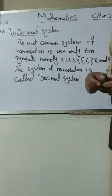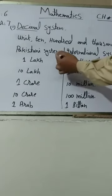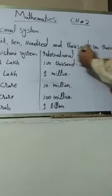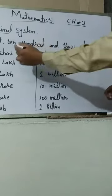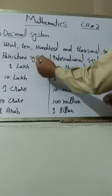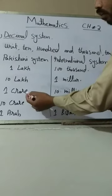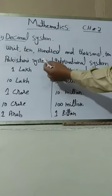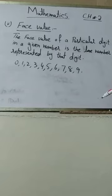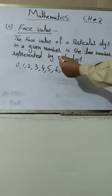In the decimal system, we have two numeration systems: the Pakistan system and the international system. Let us compare them. In both systems, unit, 10, 100, and 1000 are the same. But in Pakistan, 1 lakh is equal to 100,000, while in the international system it is 100,000 as well. In Pakistan, 10 lakh equals 1 million in the international system.